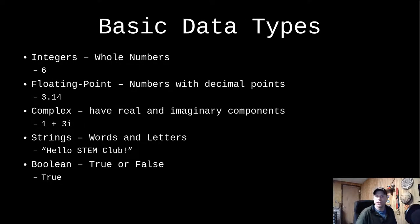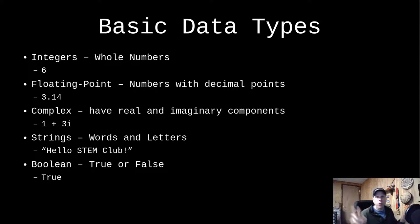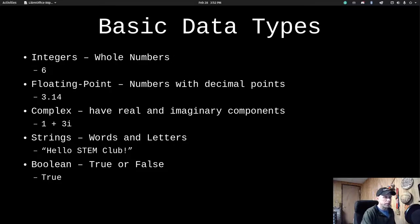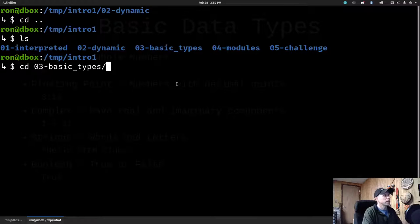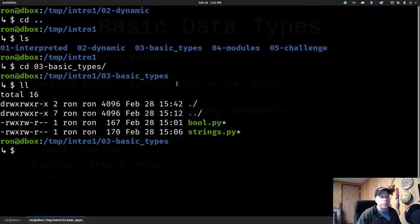So, basic data types. We've already seen integers and floating point numbers. There are also complex numbers — not covering those now, but they exist for operations that need imaginary components. We've also seen strings, which use quotes on the ends to define them. The last basic type is a boolean — it can be true or false, and typically we'll see a boolean as the result of some type of comparison.